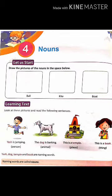This is the first page of unit 4 — nouns — in your book. What you have to do is draw the pictures of the nouns in the space given, like a ball, kite, boat. These are the things and you have to draw them.